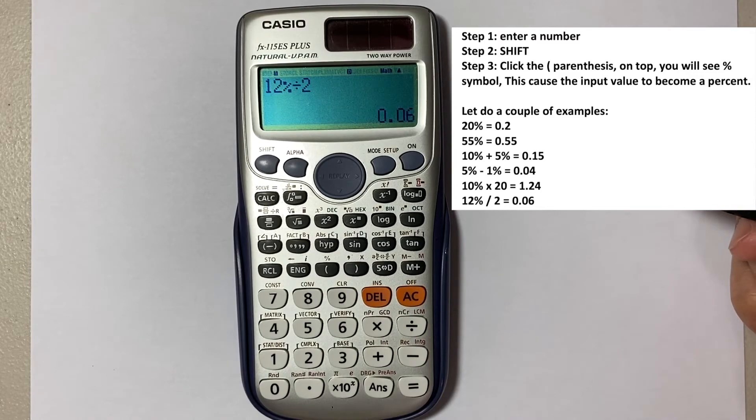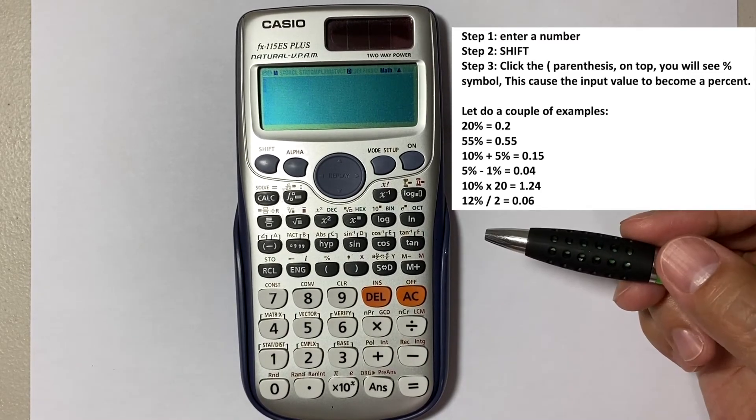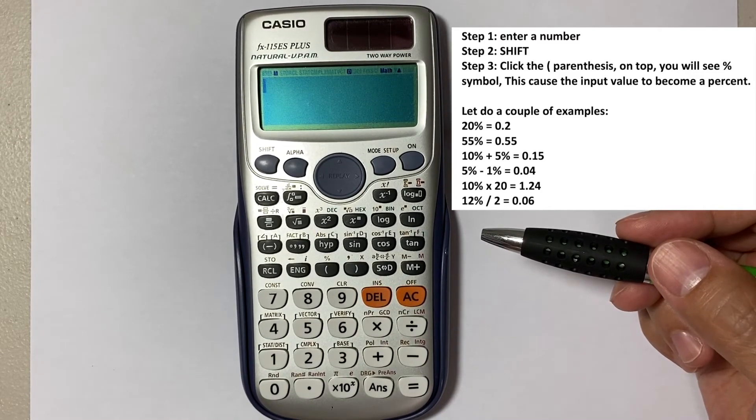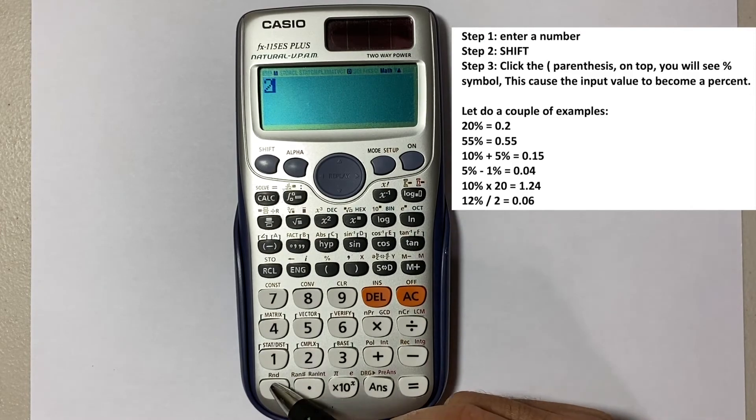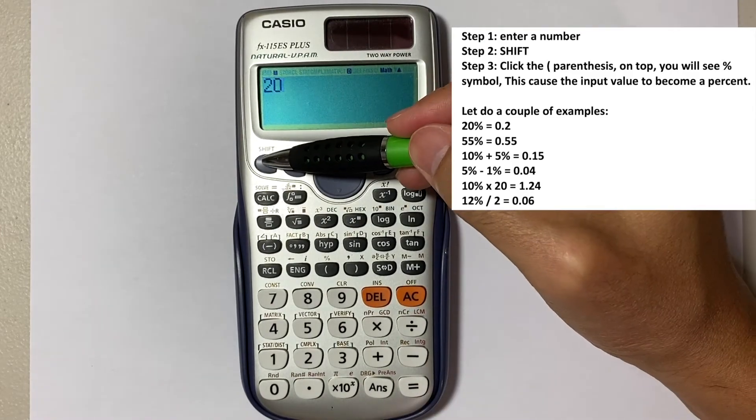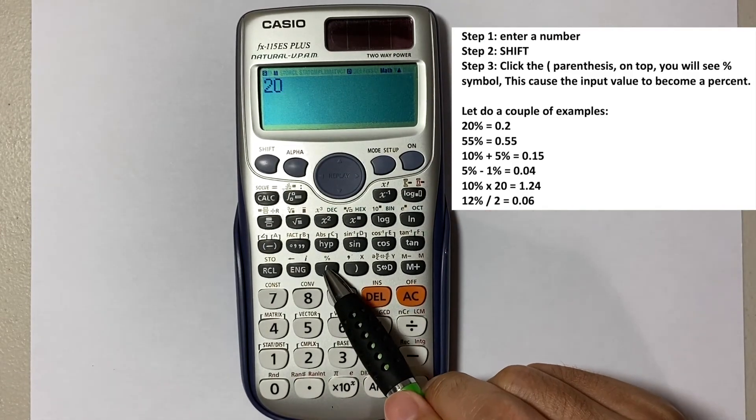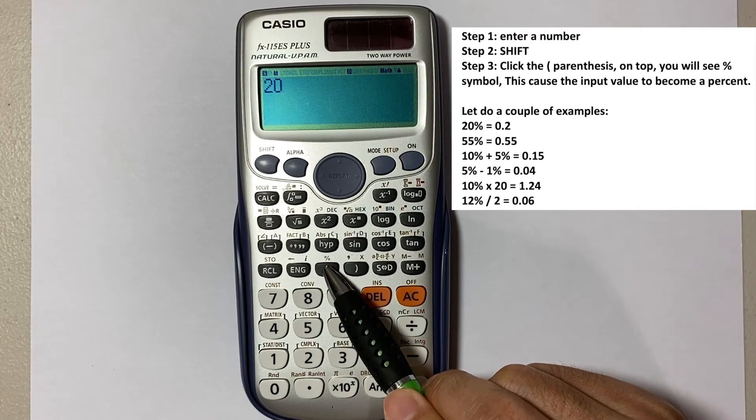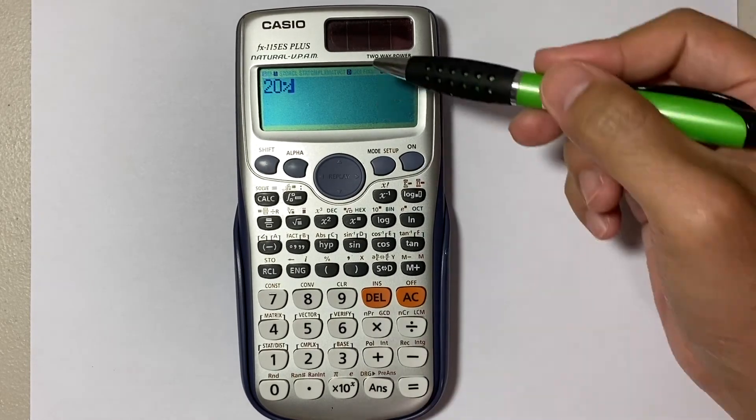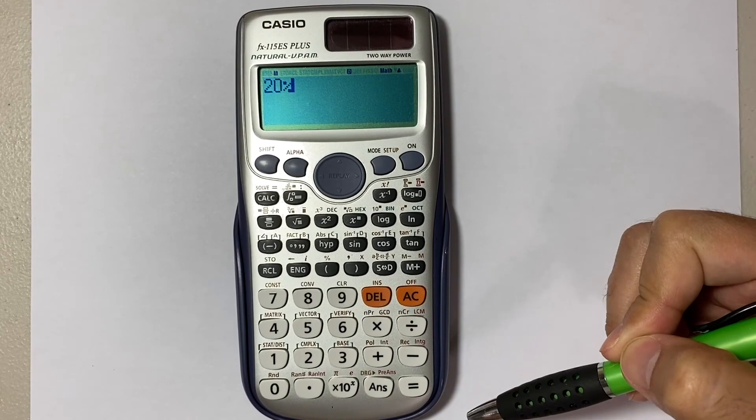Remember, in order to get to the percent calculation, you have to start with a number, then go to shift and look for the percent mark here on top of the button. Click it, and that will give you a percent on the display.